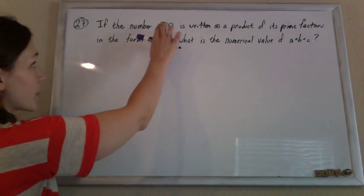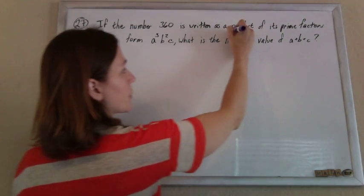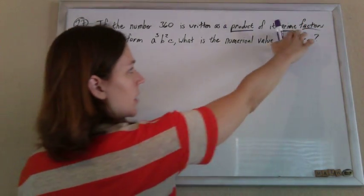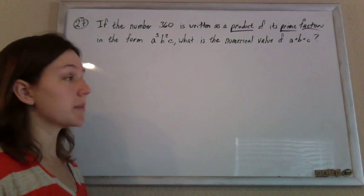All right, so we're going to write 360 as a product of its prime factors. Product means multiply, and primes are those numbers that are divisible only by one and themselves.